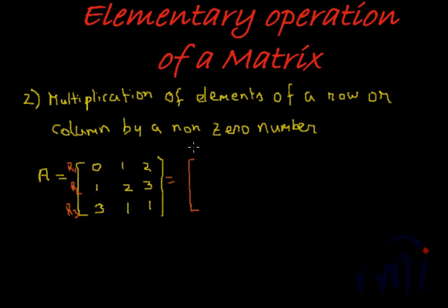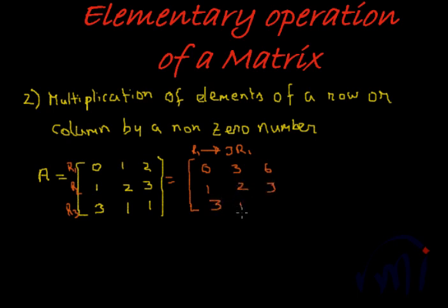Suppose we let r1 become 3 times r1. This whole row gets multiplied by 3: 0×3=0, 1×3=3, 2×3=6, and the rest of the elements remain the same. This essentially yields an equivalent matrix.